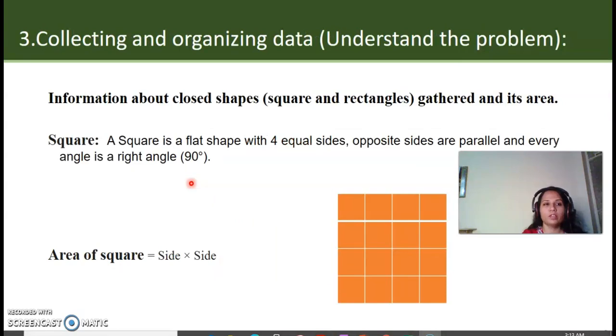As we have done with our step number 2, we move on to step number 3 which is collecting and organizing data, that is, understanding the problem. So, let's try to understand the problem. Information about closed shapes, square and rectangles gathered and its area. Since we are dealing with the area of rectangle and square, what we should know before solving our problem is the square, its definition and the formula to finding its area. Here we have a square which is 4 by 4. A square is a flat shape with 4 equal sides. Opposite sides are parallel and every angle is 90 degrees. And, the formula to finding the area of square is side multiplied by side.